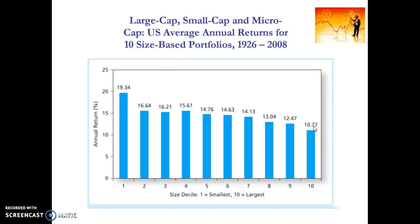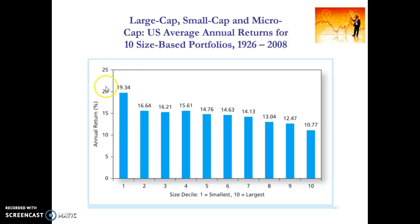There are a couple of interesting phenomena when looking at this small firm effect. Most particularly, the premium is really driven by the extreme performance of that very small decile of stocks. The very small decile earns a return of 19.34%, and that drops off quite a lot. Even though we see a continually decreasing return as the decile of stocks gets larger, none of the drop-offs are quite as big as this first one. So a key question is whether we can actually feasibly invest in the smallest decile of stocks.